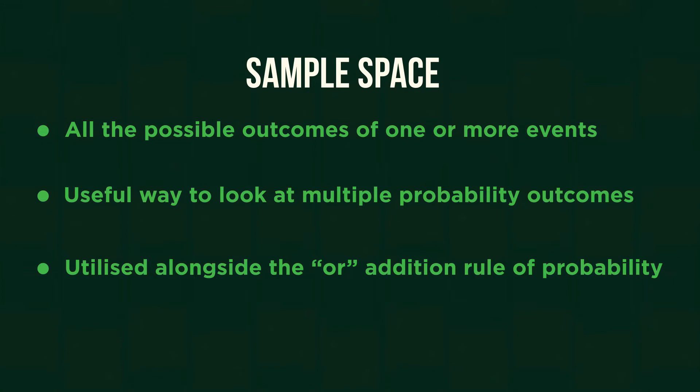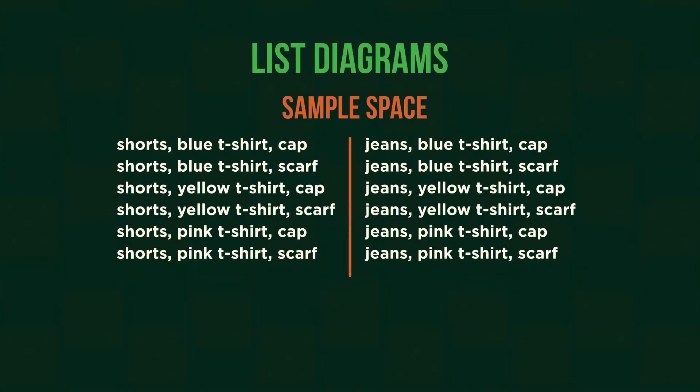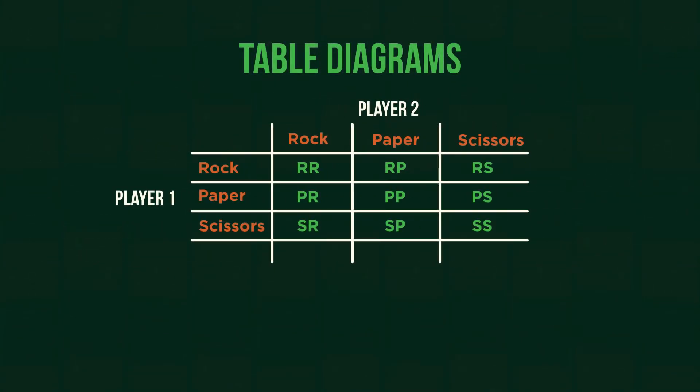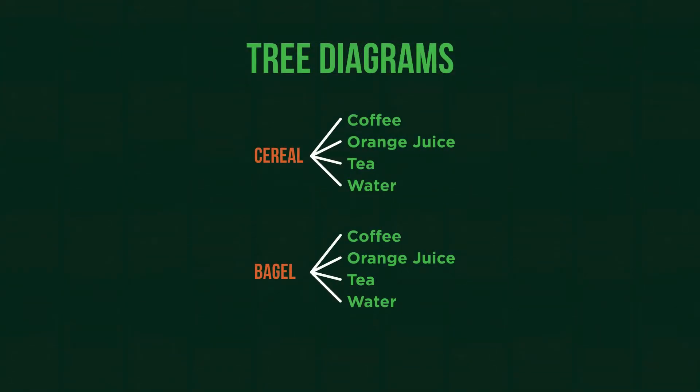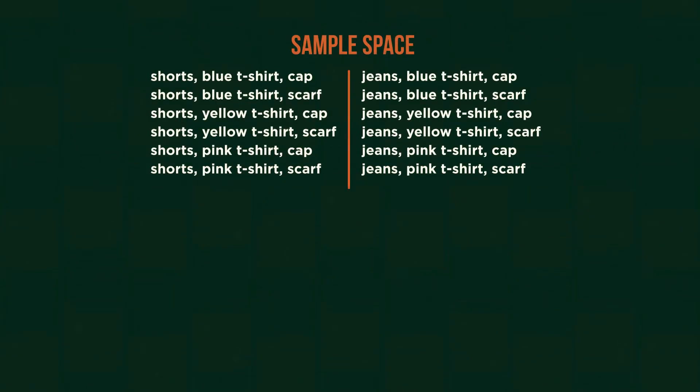There are three ways of presenting this. The first is as a list. The second is in a table. Or third as a tree diagram. Here, we will focus on lists and tables.